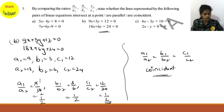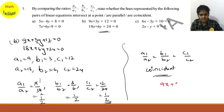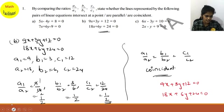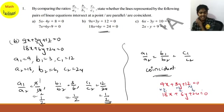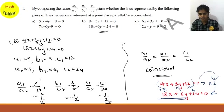A useful tip to observe directly: in equation 1 (9x + 3y + 12 = 0) and equation 2 (18x + 6y + 24 = 0), you can see that 2 times equation 1 gives equation 2 — since 2×9=18, 2×3=6, and 2×12=24. So if the first equation is multiplied by a number to get the second equation, the lines are coincident.